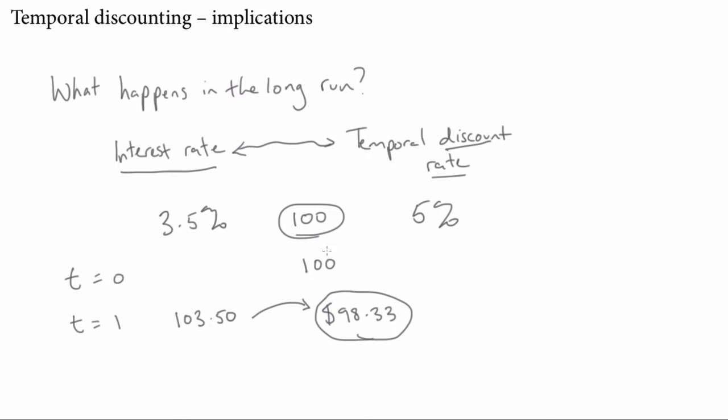Now this figure is less than the original, so for an impatient person, it's not worthwhile to invest the money in the bank. Their discount rate is greater than the interest rate. This is the kind of person who's likely, instead of investing their money and saving it, to borrow money. They might borrow money even though it means they have to repay a larger amount in future, because to them suffering a larger cost in future is not as big a deal because it gets discounted by that 5% rate.